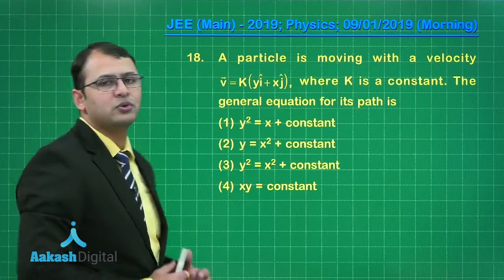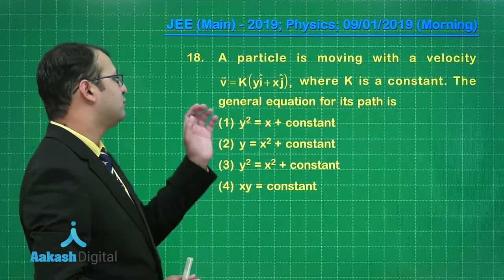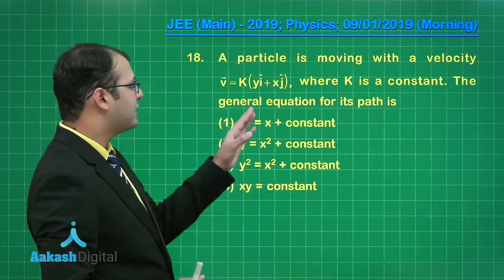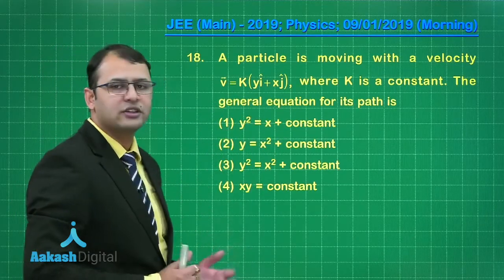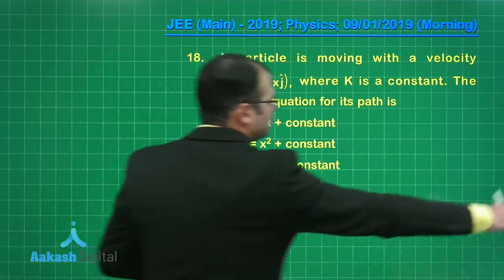This question belongs to mechanics basically kinematic section. A particle is moving with a velocity of V equals to K y i cap plus x j cap where K is a constant. The general equation for its path has to be found here. Let's start with the solution.